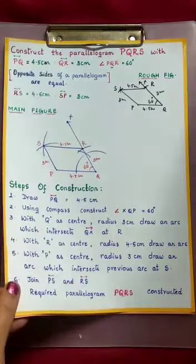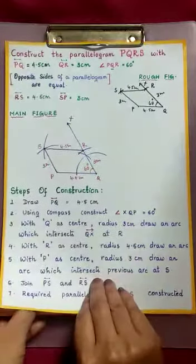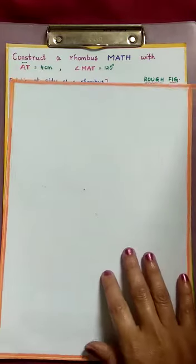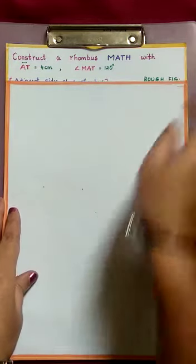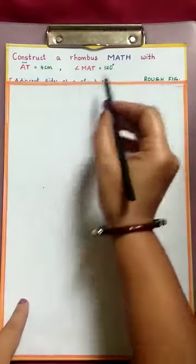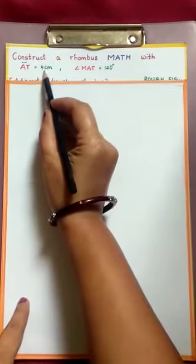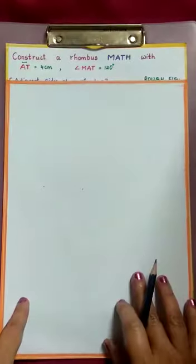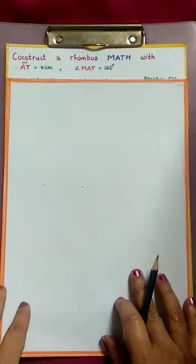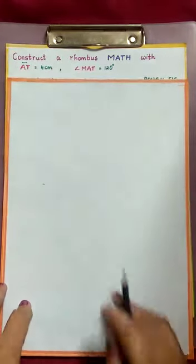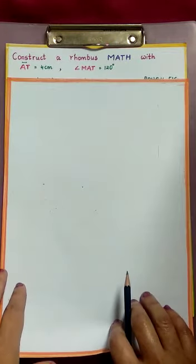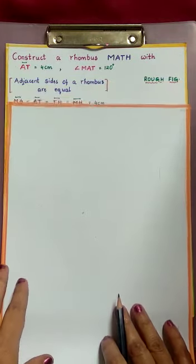Next, let us construct a rhombus. Construct a rhombus MATH with side 4 cm and angle MAT as 120 degrees. We need 5 measurements, but here they have given only 2. Then what about the other 3?